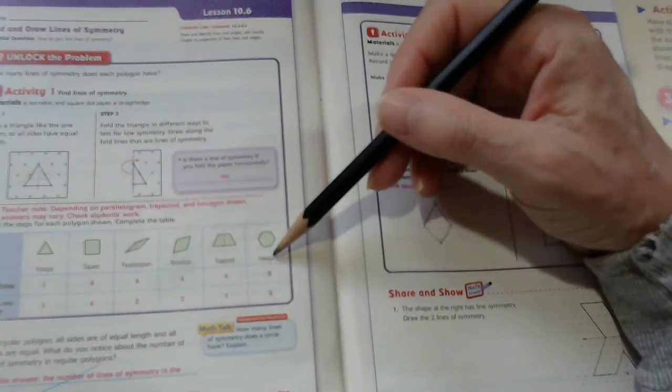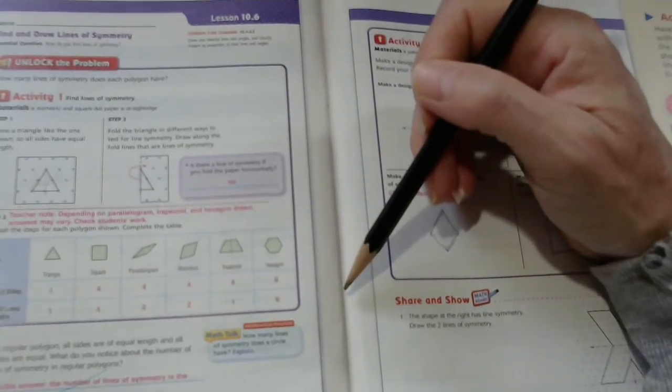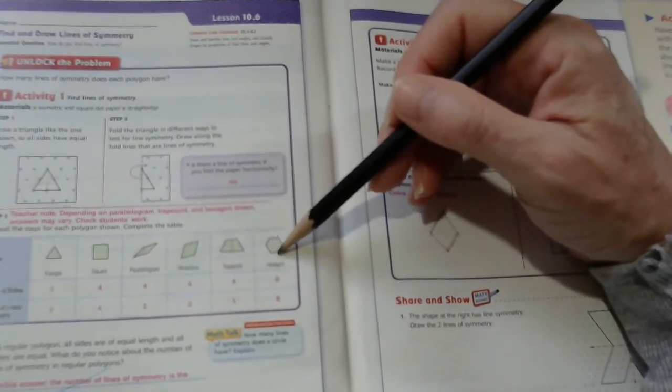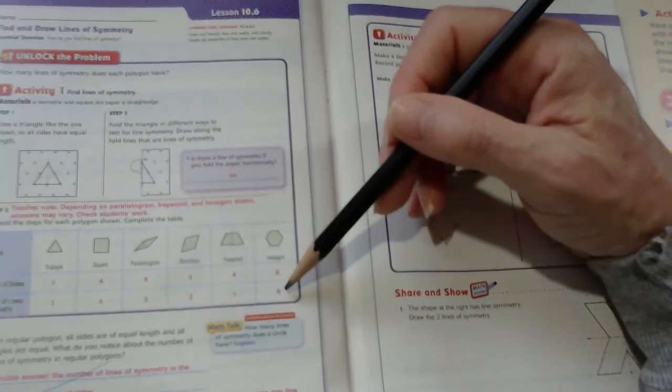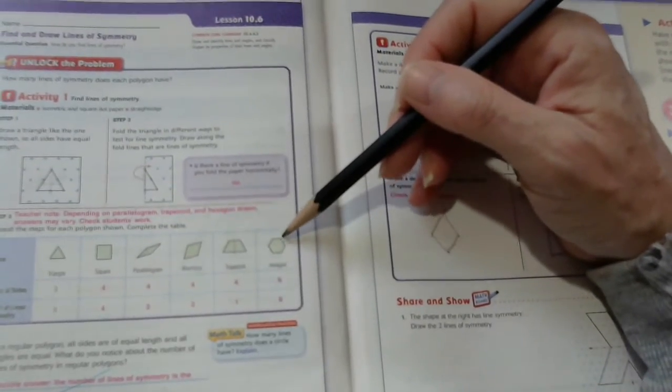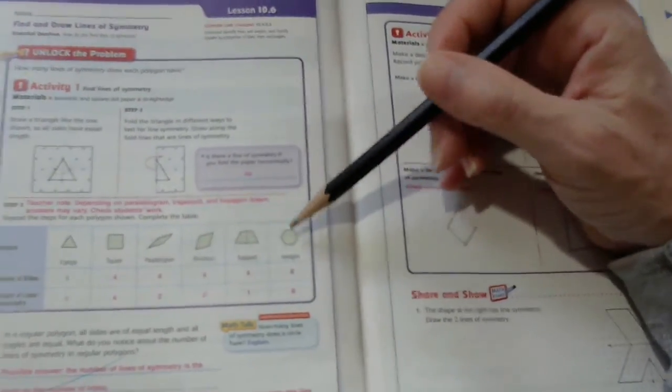Now, interestingly enough, a hexagon has six sides and six lines of symmetry. It might be interesting to cut one of those out and see if you can fold it and find all of those.